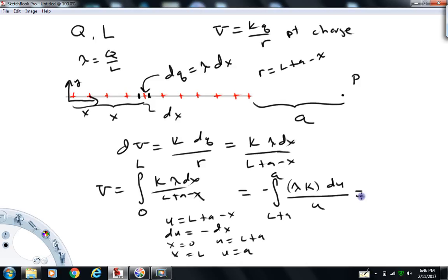So what we have now is an integral that's reasonably easy to do. The integral du over u is natural log u. So we're going to have lambda times k times the natural log—if I applied the integral to this right here, it would be natural log a over l plus a. What I'm going to do is absorb that minus sign into the limits. And what that does is flips that upside down. So we're going to have natural log of l plus a over a.